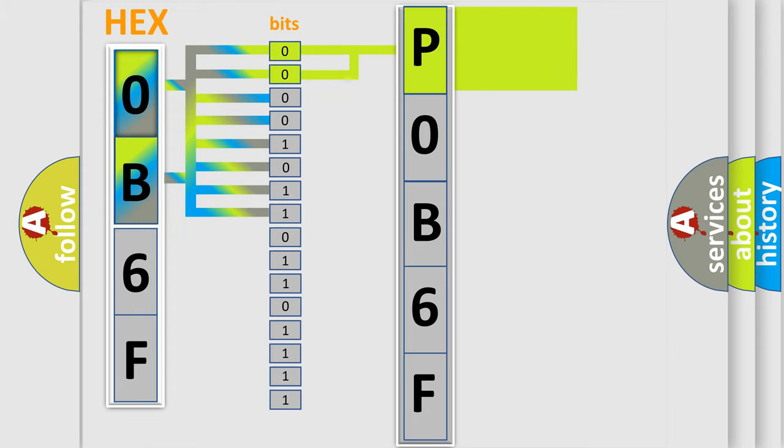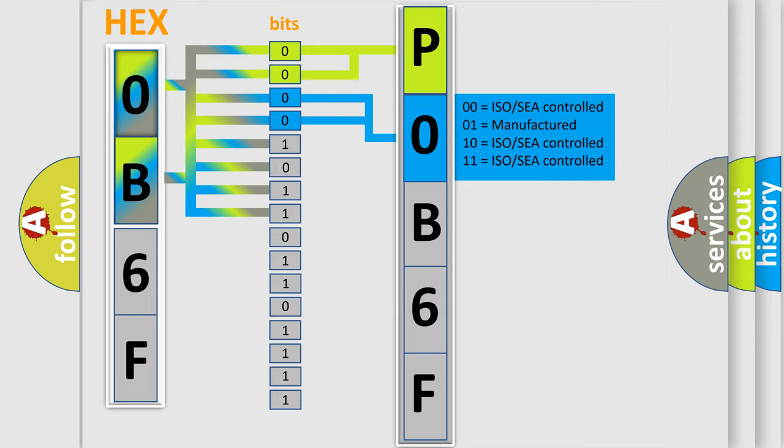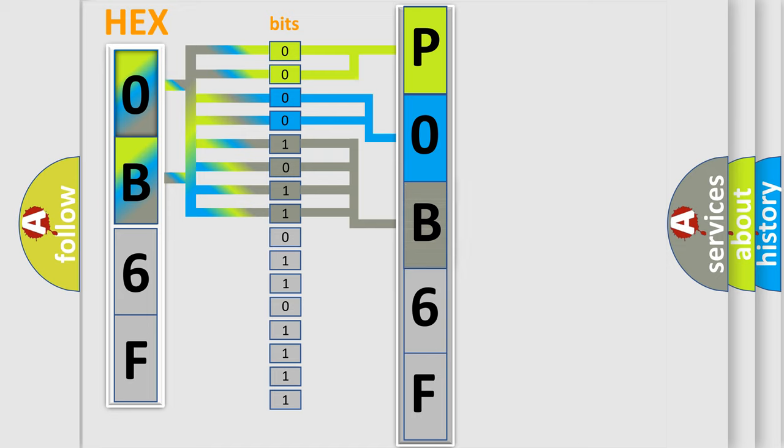By combining the first two bits, the basic character of the error code is expressed. The next two bits again determine the second character. The last bit styles of the first byte define the third character of the code.